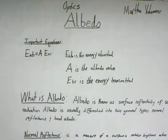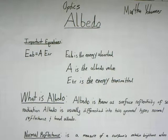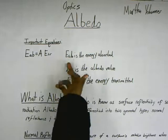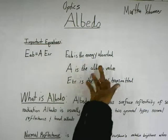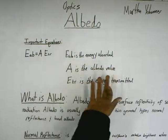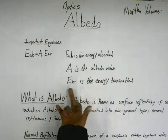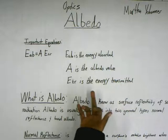For the optics albedo, the important equation is EAB equals A times E_TR, where EAB is the energy absorbed, A is the albedo value, and E_TR is the energy transmitted.